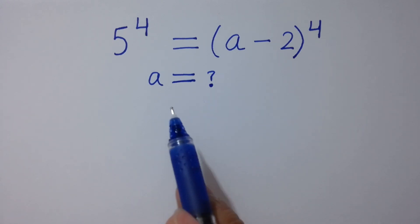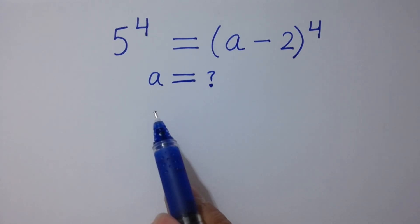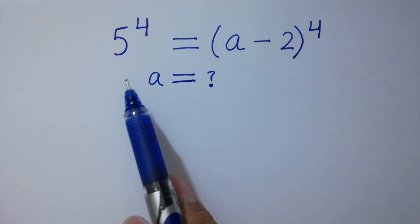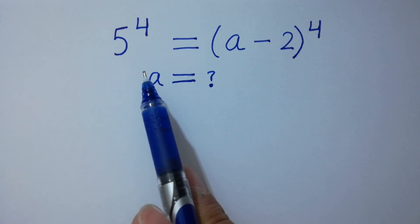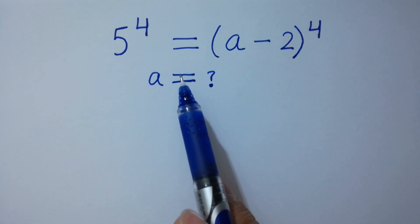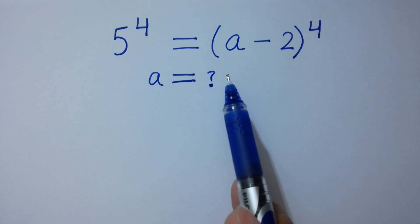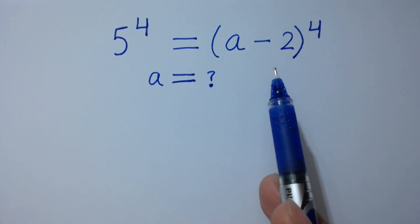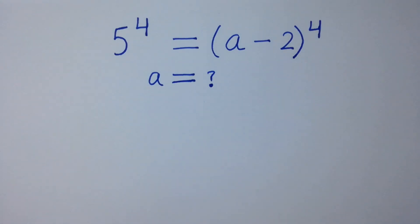Hello friends. Find the value of a if 5 to the power 4 equals (a minus 2) to the whole power 4. Let's have a solution here.